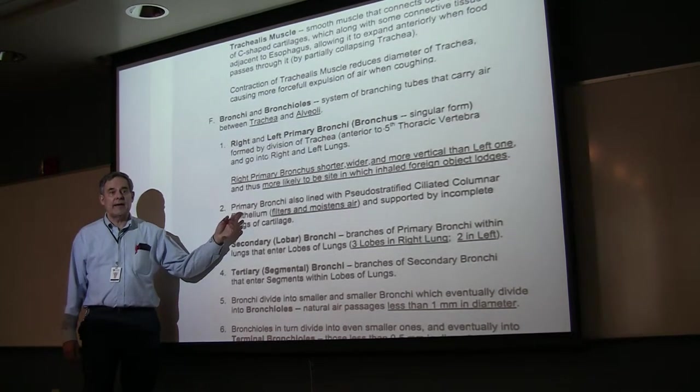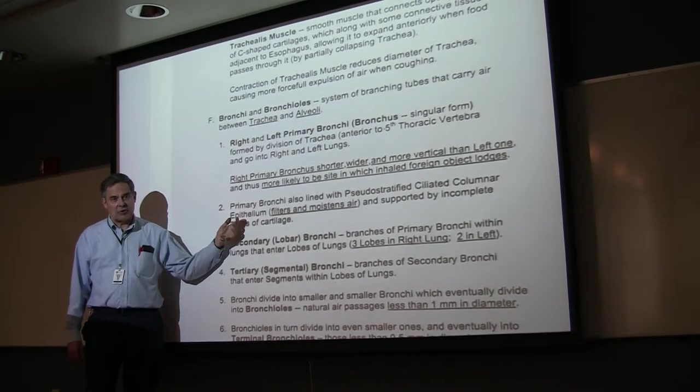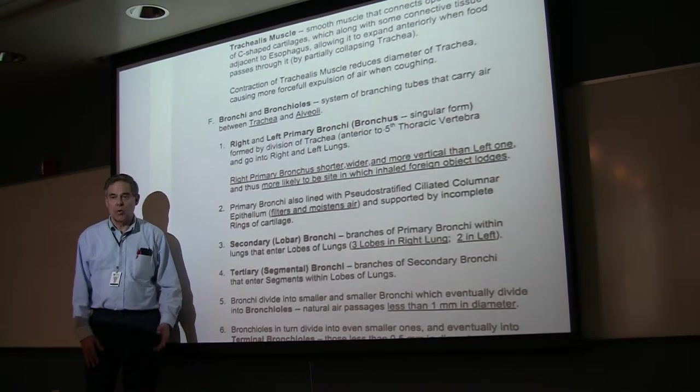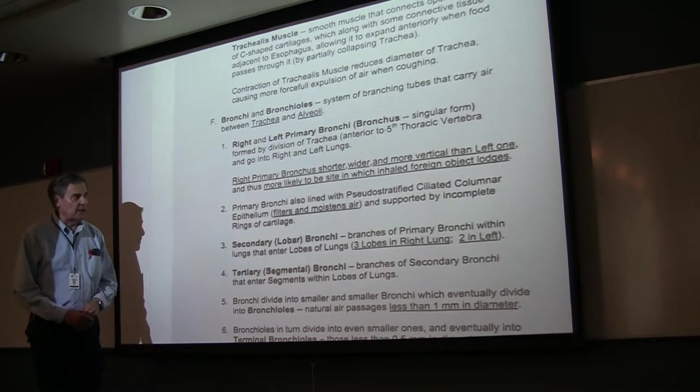The primary bronchi are aligned with the same type of epithelium we've seen in the nasal cavity, the nasopharynx, lower part of the larynx—the pseudostratified ciliated columnar epithelium. So it's warming, moistening, and filtering the air.